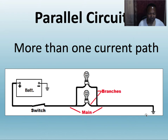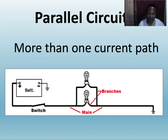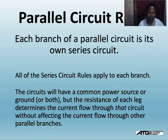One thing you need to understand about parallel circuits: unlike a series circuit, if one bulb blows out, the other one still works. Think about the headlights on your car — if one headlight goes out, the other still works. That's why most cars are hooked up in parallel or series-parallel. In a series circuit, one light goes out and everything goes down.